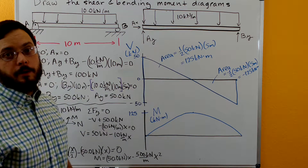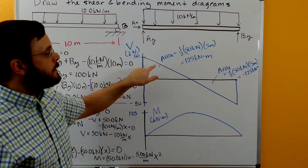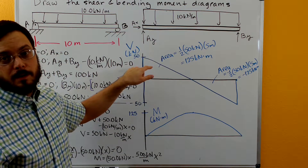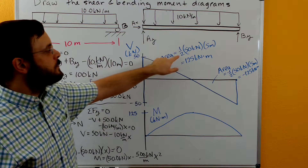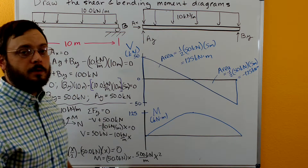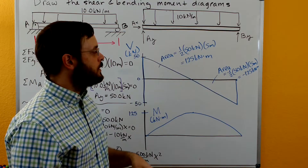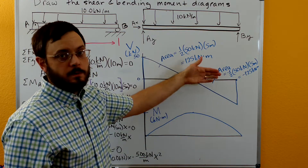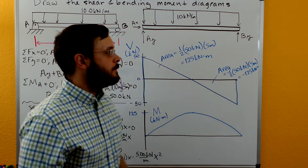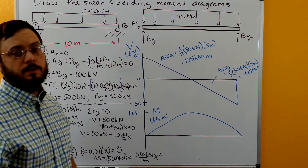We need to calculate these two areas to help us draw the bending moment diagram. The first area is a triangle above the x-axis, so it's positive: one half times base five meters times height 50 kN gives us 125 kN·m. The second area is below the x-axis, so it's negative — also 125 kN·m, just negative.